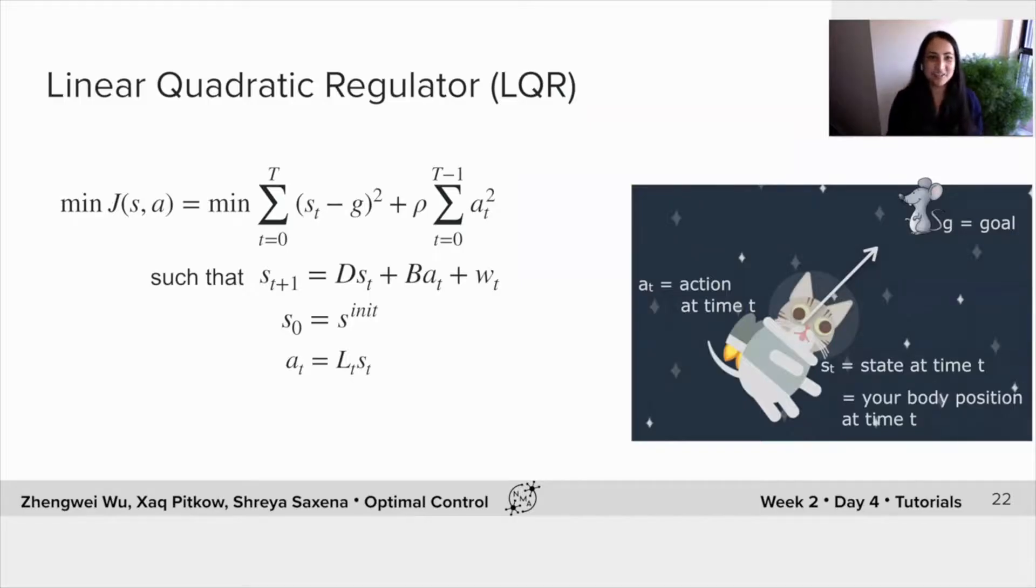So here, this is now the full optimization. Here we see that we want to minimize this cost function that we talked about with the two components, J_state and J_control, such that the state follows these dynamics and the action also is a linear function of the state.